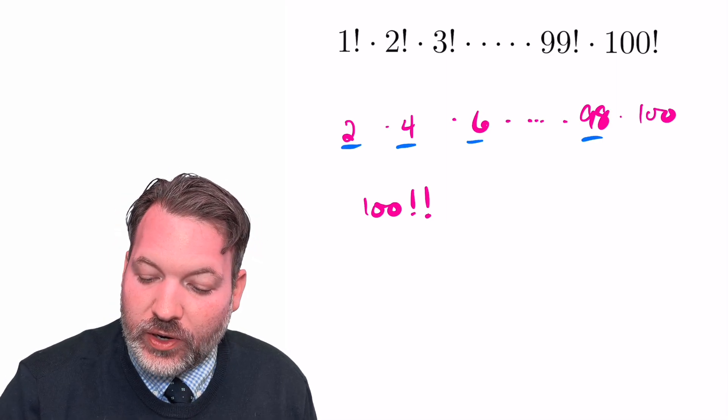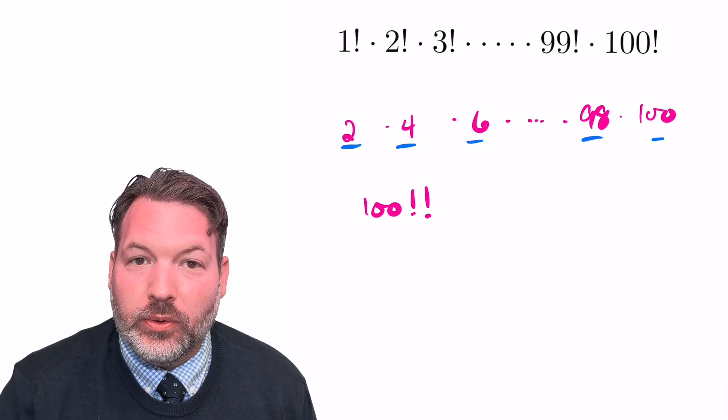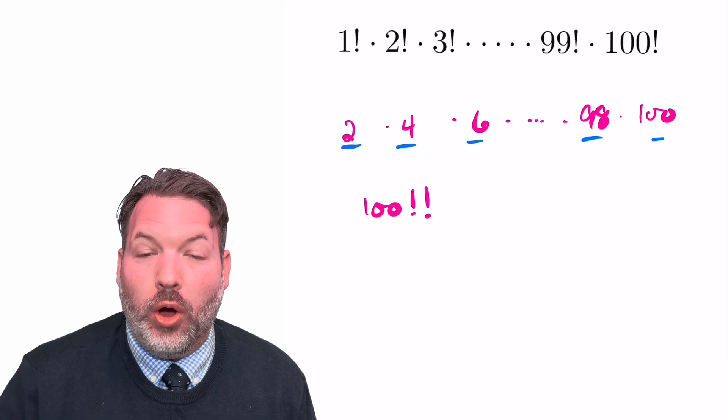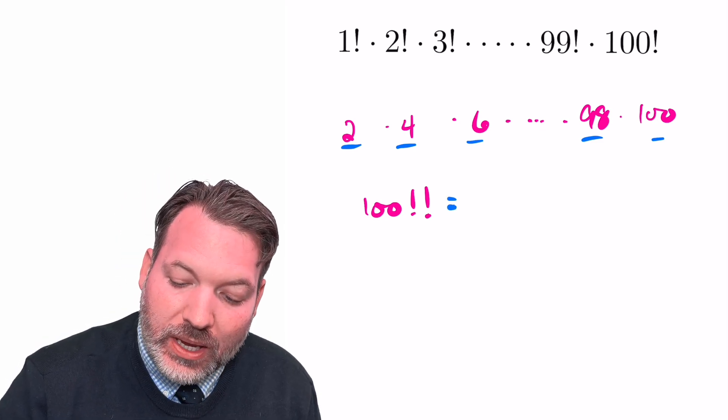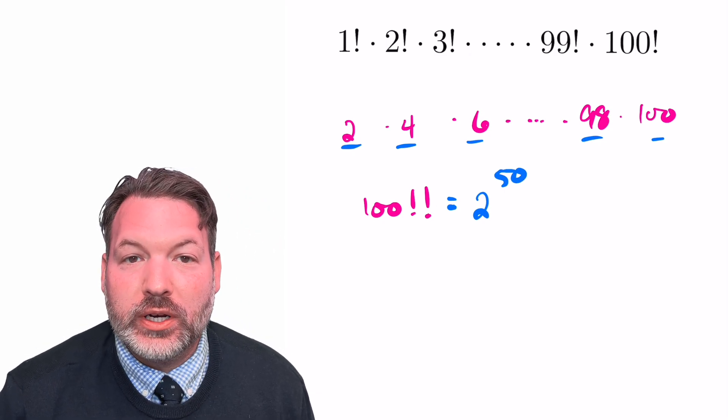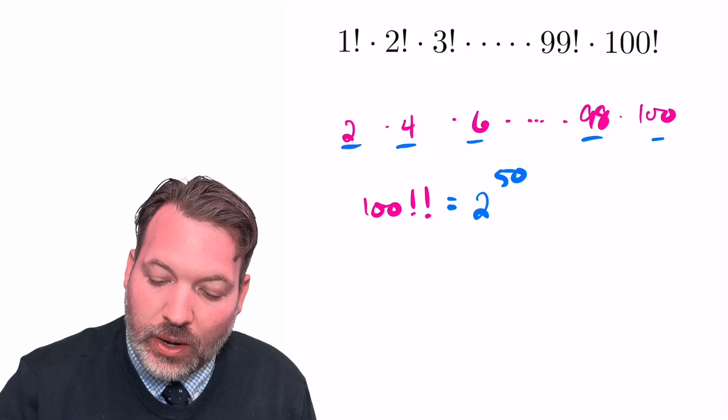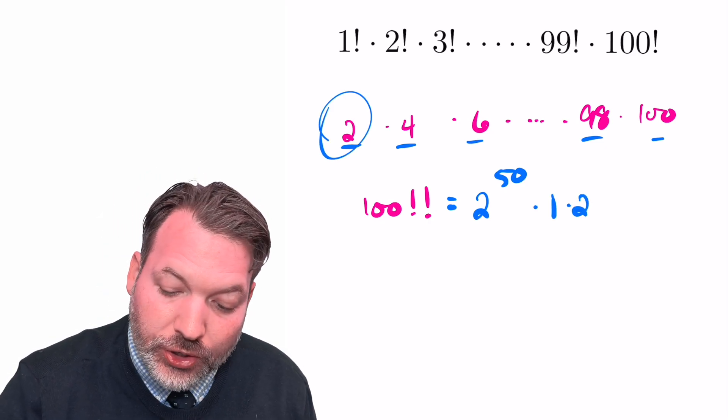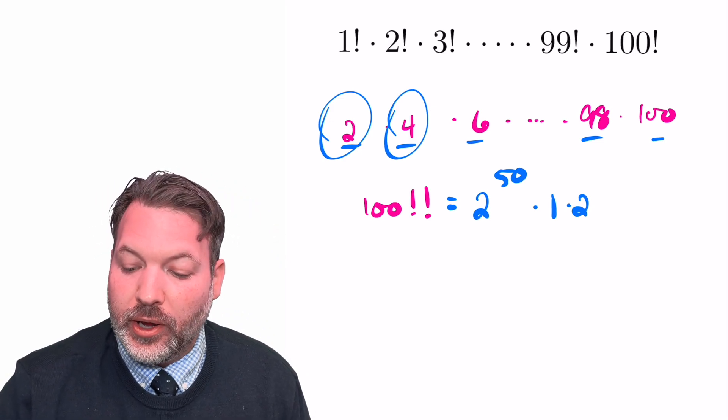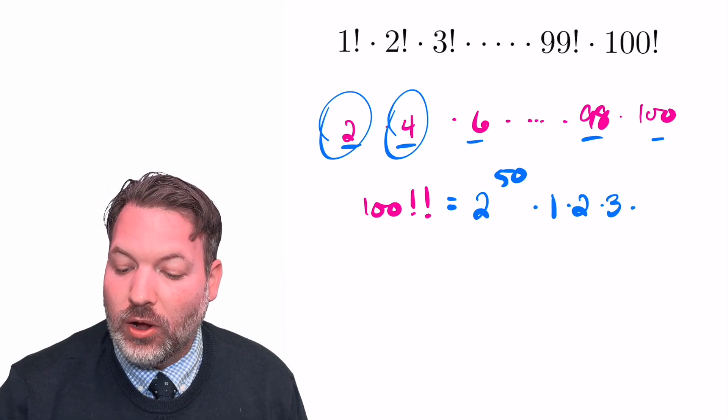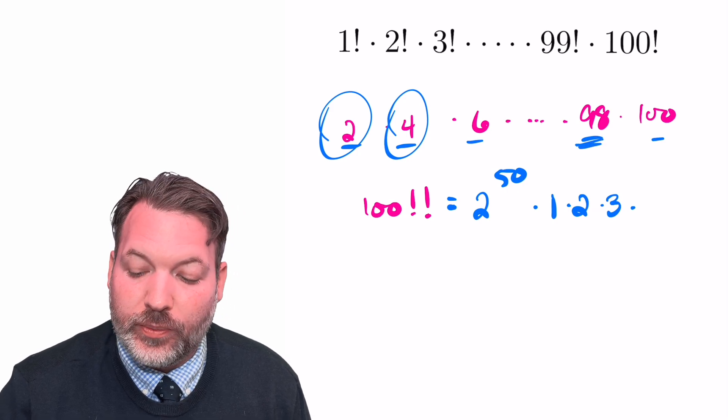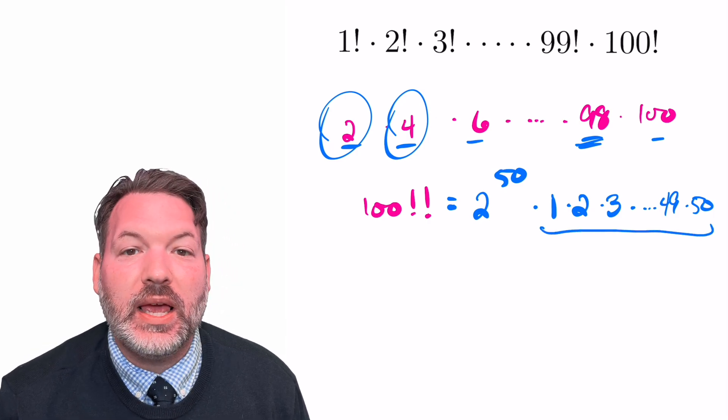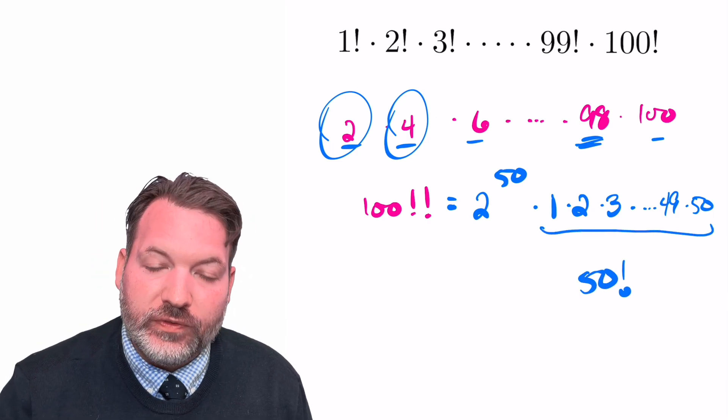Every single one of these even numbers obviously is even. It's a multiple of 2. I can tell that there are 50 of those numbers because I'm looking at the first 100 integers, but only the even ones. And so what that means is this number involves 50 different 2s. But if I took those different 2s out of all of these numbers, what I would have left is a 1 from the 2, a 2 from the 4, a 3 from the 6, a 4 from the 8, all the way up to a 49 from the 98, and a 50 from the 100. And this number is a factorial. This is equal to 50 factorial.